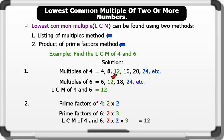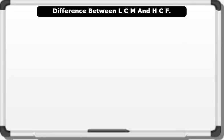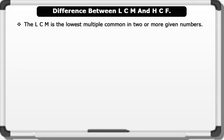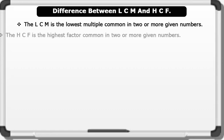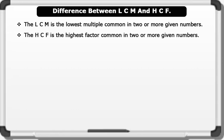Difference between LCM and HCF: the LCM is the lowest multiple common in two or more given numbers. The HCF is the highest factor common in two or more given numbers. Now let's find the difference between the LCM and HCF of two or more numbers.